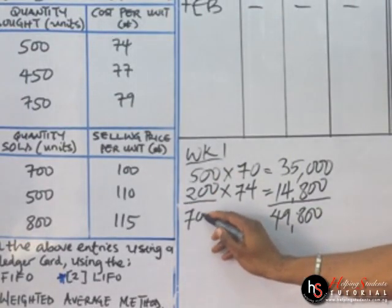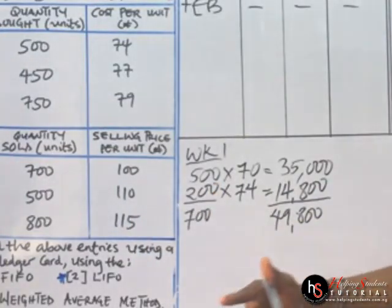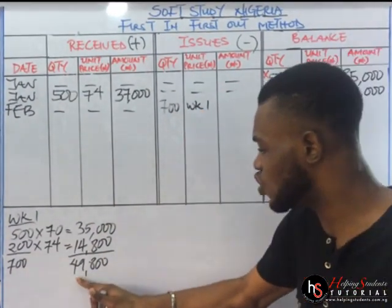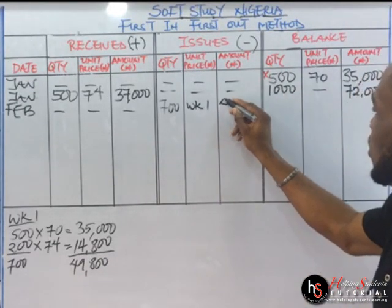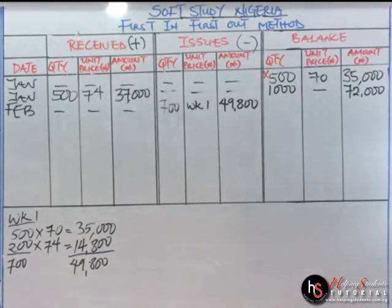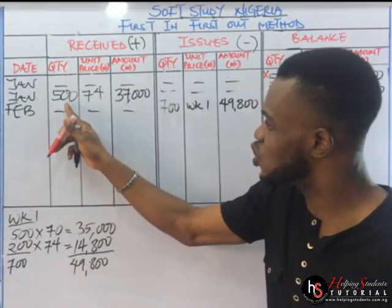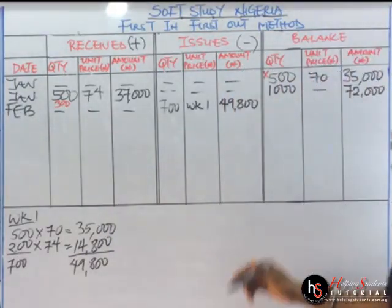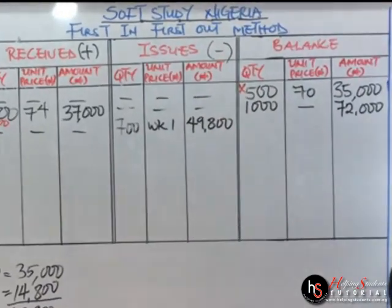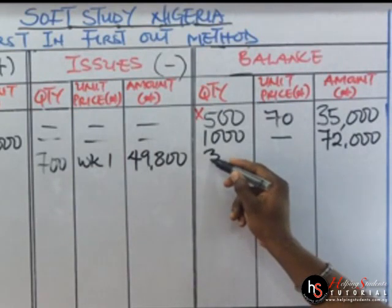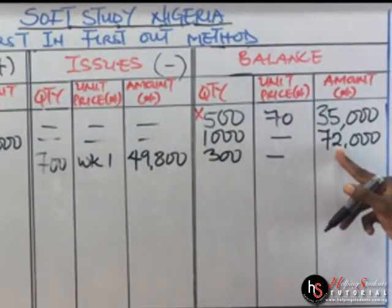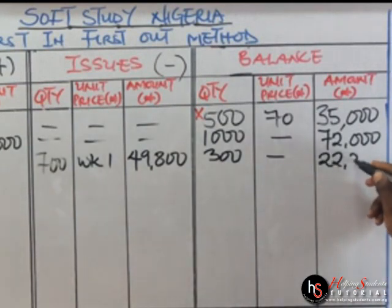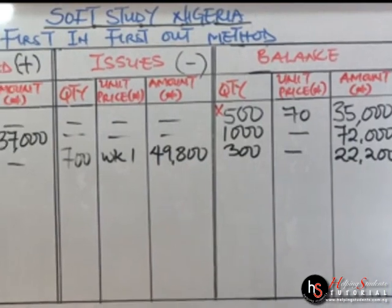So we have 700 units in our working, which tallies with the question's 700 units quantity sold. We record 49,800 in the issues section. Mind you, when we collected 200 units from the January batch, we are left with 300 units there. Coming to the balance section, issues are subtracted: 1,000 minus 700 gives us 300 units. Then 72,000 minus 49,800 gives us 22,200. We are done with February.